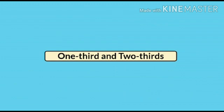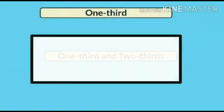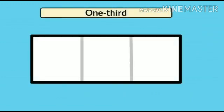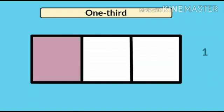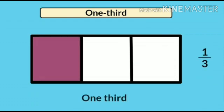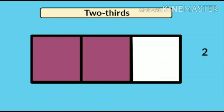Now, we will discuss about one third and two thirds. When something is divided into three equal parts, we call them thirds. One part out of three total parts is one third. Two parts out of three total parts is two thirds.